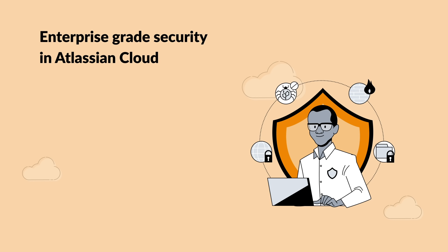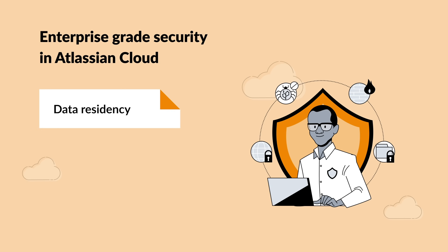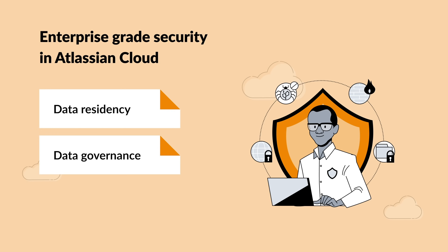Draw.io also offers enterprise-grade security. Data residency in Atlassian Cloud is currently a hot topic. Draw.io has always stored all diagrams exclusively in Confluence Cloud. Additionally, with our new data governance option, you can determine the server endpoints. And if you want to restrict data transmission to between your browser and Confluence Cloud only, use our new lockdown feature.